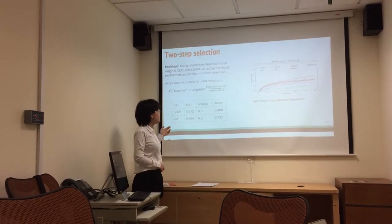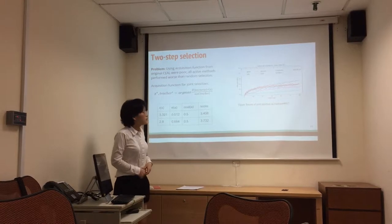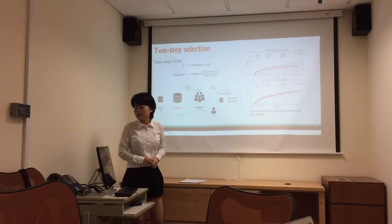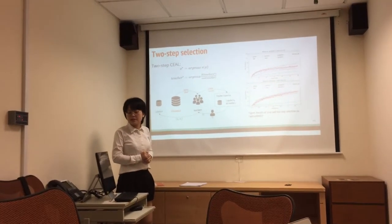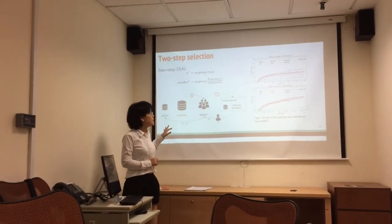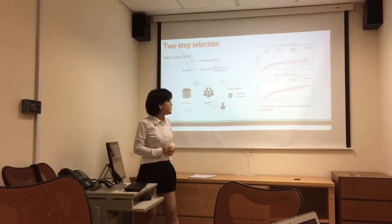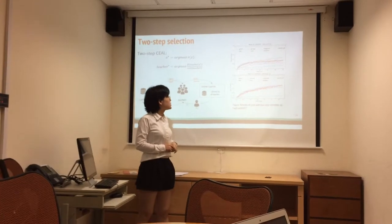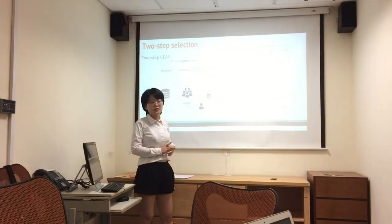This also occurs when a less uncertain instance has a lower cost. To solve this problem, we tried a two-step selection strategy — separating instance selection and teacher selection. We first select the instance, then select the teacher given the instance. After applying two-step selection, all active learning methods improved and also surpassed random selection.